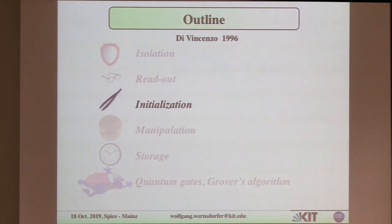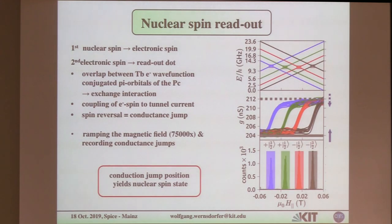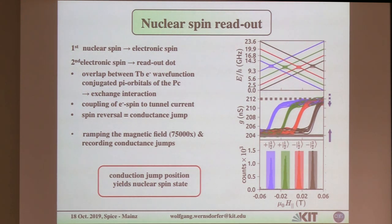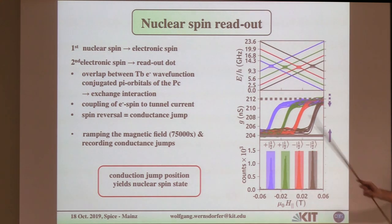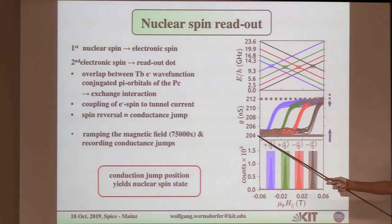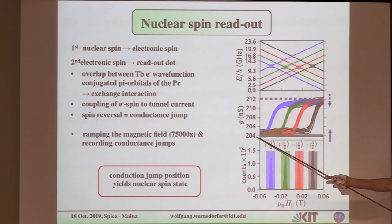Question: what percentage of the time do you get the spin transition when you sweep? Answer: normally you have Landau-Zener probabilities depending on how fast you scan the applied field. Due to the interaction of the electronic spin with the quantum dot, we found that the electronic spin is tunneling more than 90% of the cases when we sweep. Sometimes it doesn't tunnel, and so we didn't measure our nuclear spin — but 90% of the time that's not the case.